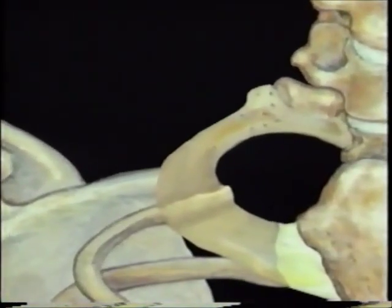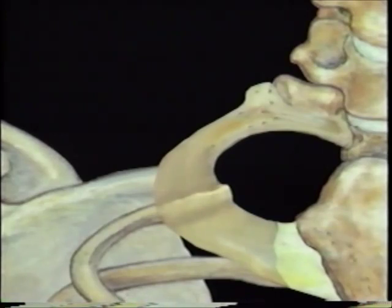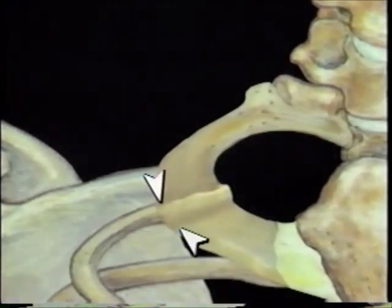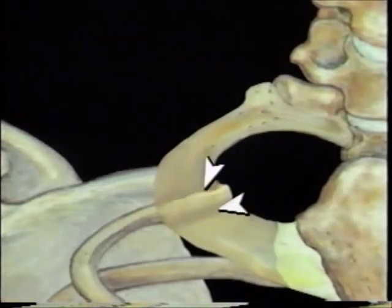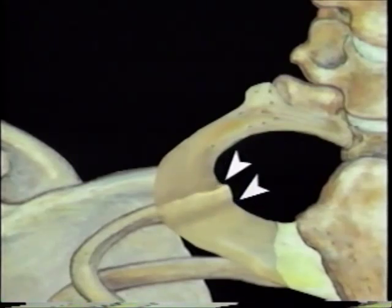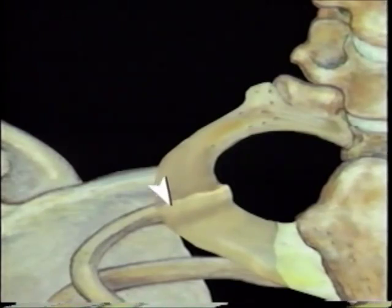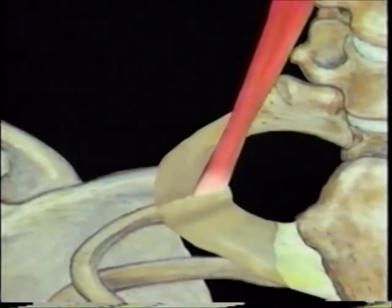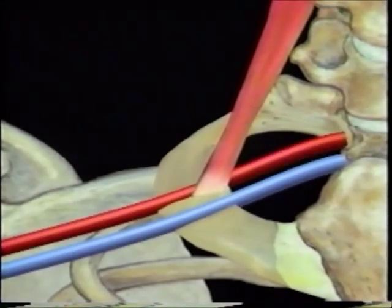The first rib is broad and flat and slopes obliquely downward from its articulation with the first thoracic vertebra to its sternal end. The first rib's superior surface is crossed by two shallow grooves which serve as beds for the axillary subclavian vein and the subclavian artery. The grooves are separated by a ridge called the scalene tubercle, which serves as the attachment for the anterior scalene muscle. The anterior scalene muscle is the posterior boundary for the axillary subclavian vein.